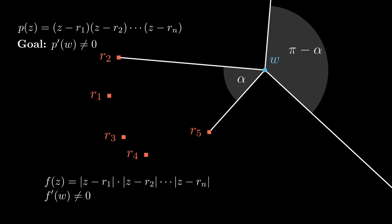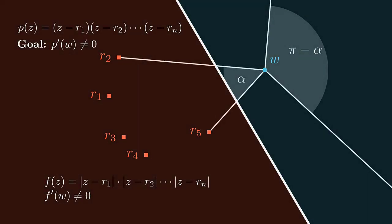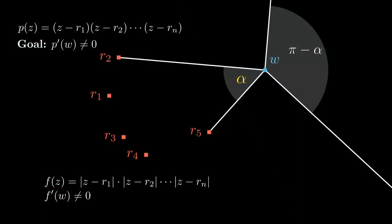Remember that w's being outside of the roots was witnessed by the existence of a line that separated w from the red squares. That means that alpha, the angle that the roots take up in your vision if you're standing at the point w, that angle is less than pi, which means that pi minus alpha is bigger than zero,